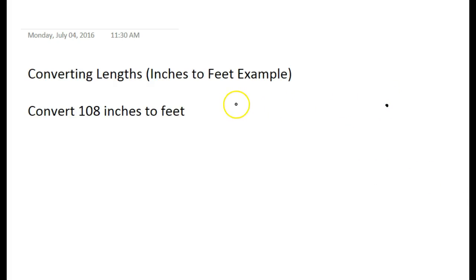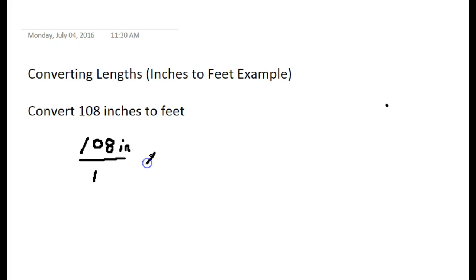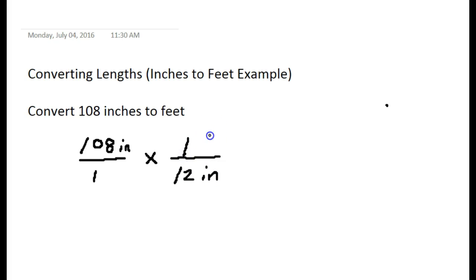The best way to show this is with examples. Let's start with a simple one: convert 108 inches to feet. I always start by putting my value — 108 inches — over one, because I'm multiplying fractions. Then I multiply by a fraction with inches on the bottom and feet on the top, since I'm converting to feet. There are 12 inches in one foot.